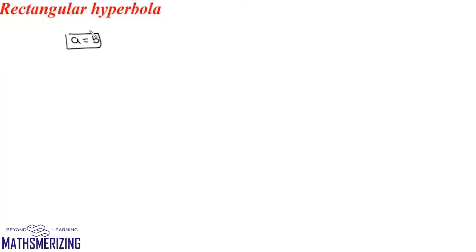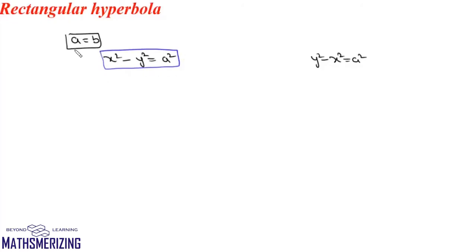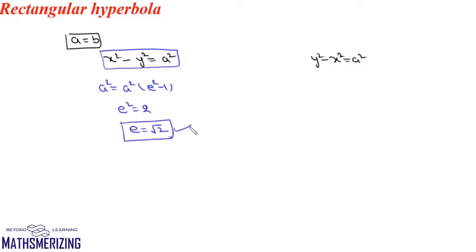There will also be questions on rectangular hyperbolas. If in a hyperbola a = b, we call it a rectangular hyperbola. Its equation will be x² - y² = a² (first form) or y² - x² = a². For a rectangular hyperbola, since a = b, we write a² = a²(e² - 1), so e² = 2, meaning the eccentricity is always √2.